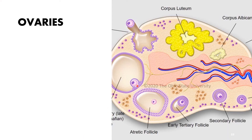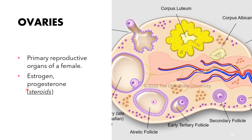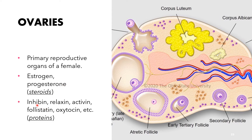The ovary is the primary reproductive organ of the female. It is responsible for the production of steroid hormones, including estrogen and progesterone, and also protein hormones including inhibin, relaxin, activin, follistatin, oxytocin, and others. The diagram shows the cross-section of the ovary, illustrating the different developmental stages of the follicle and the development of the corpus luteum.